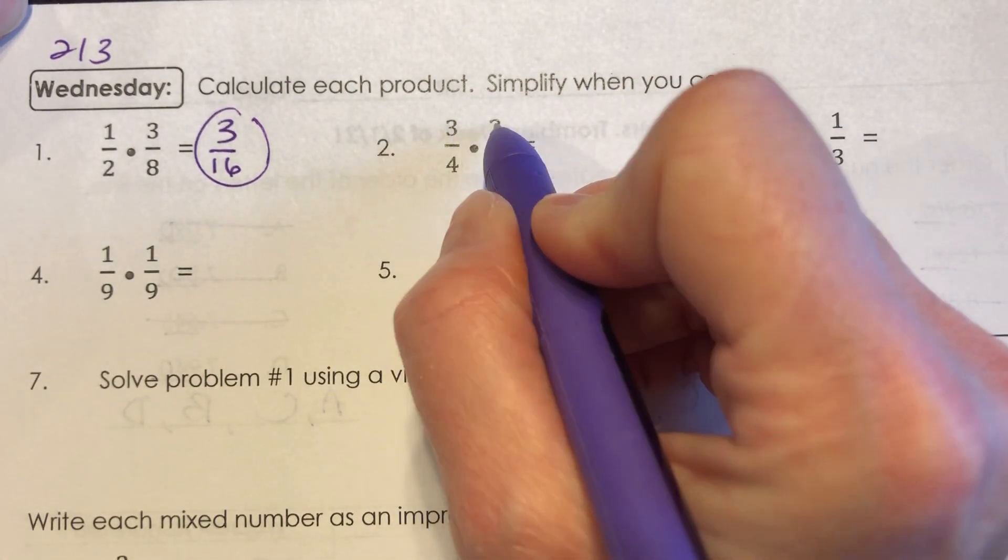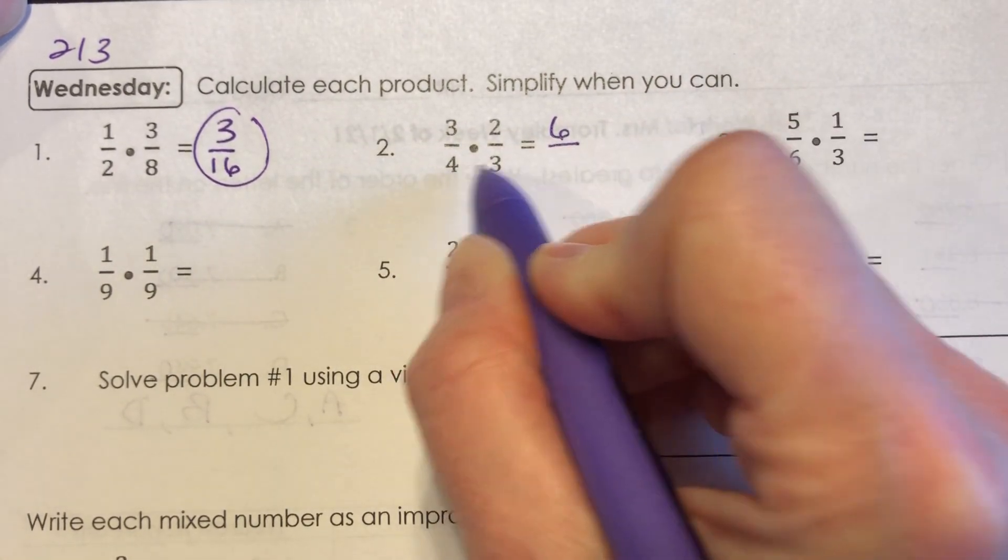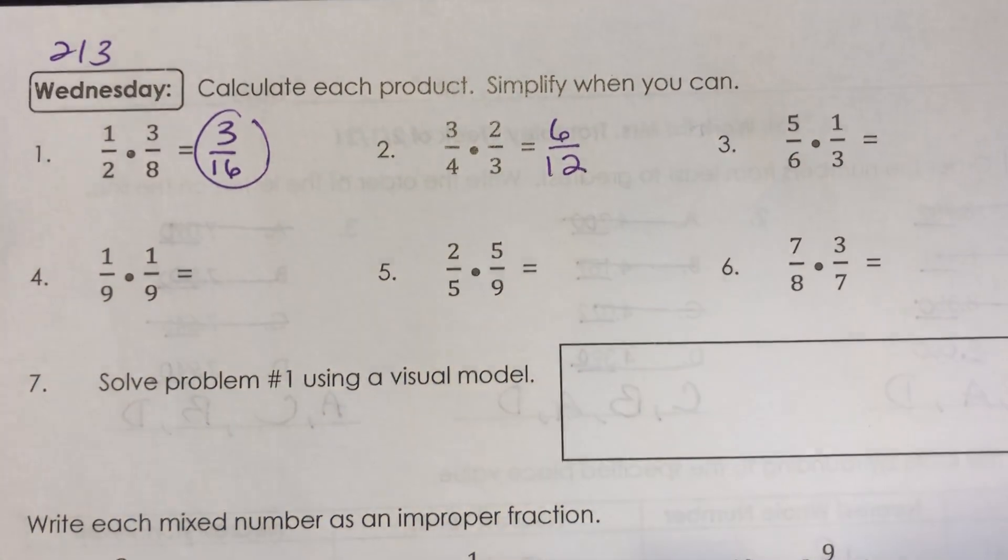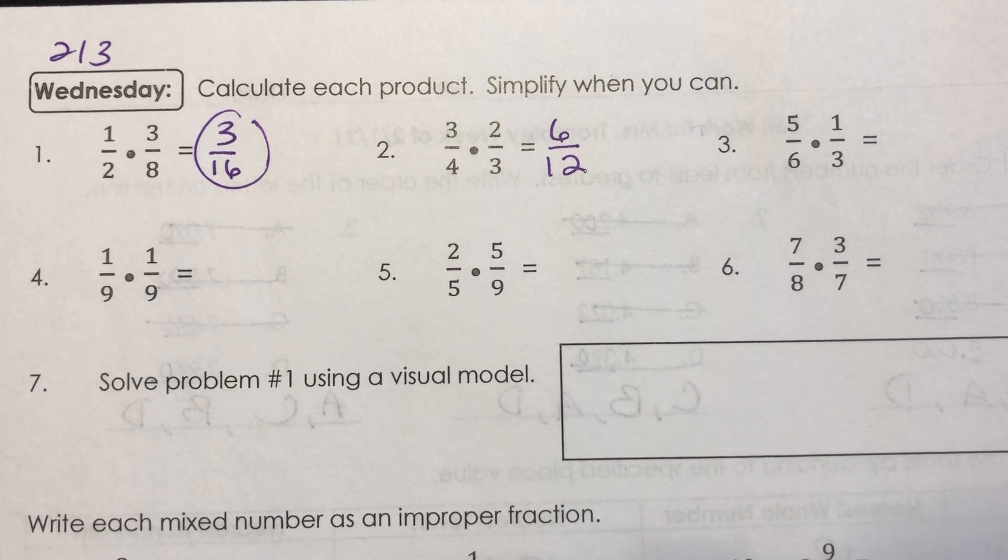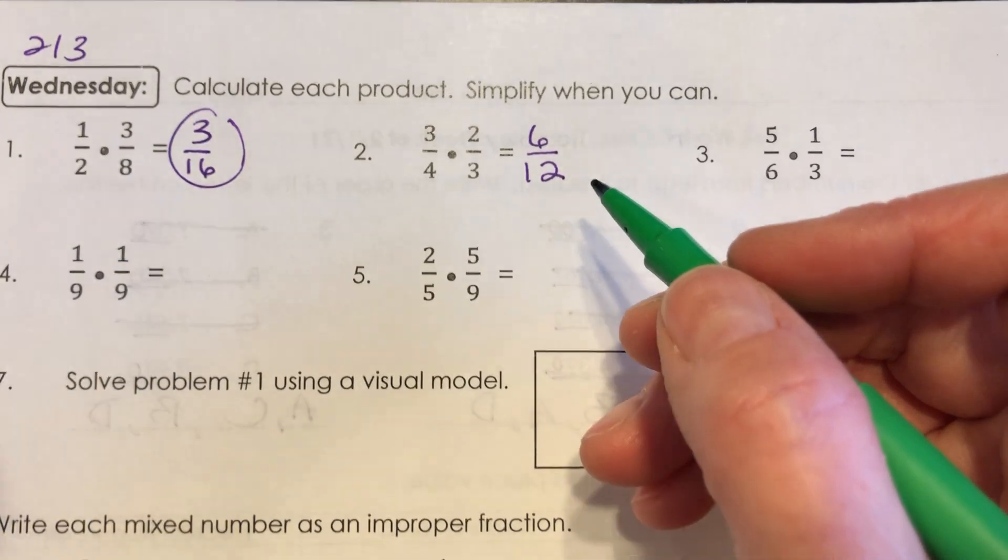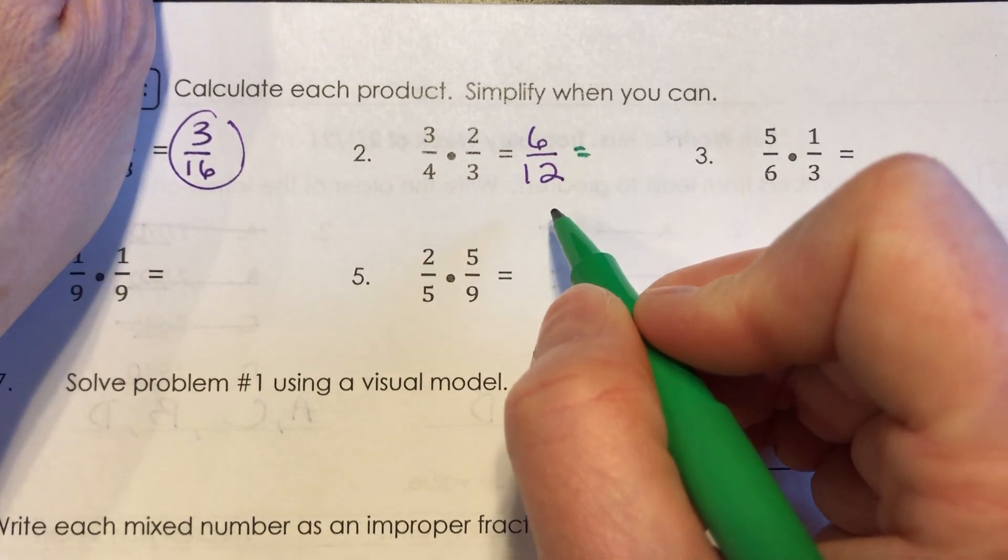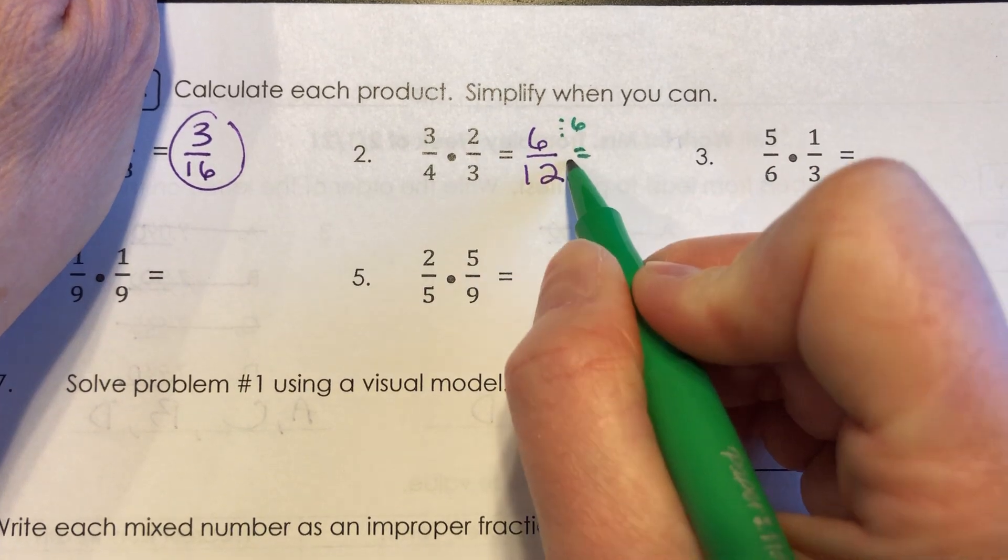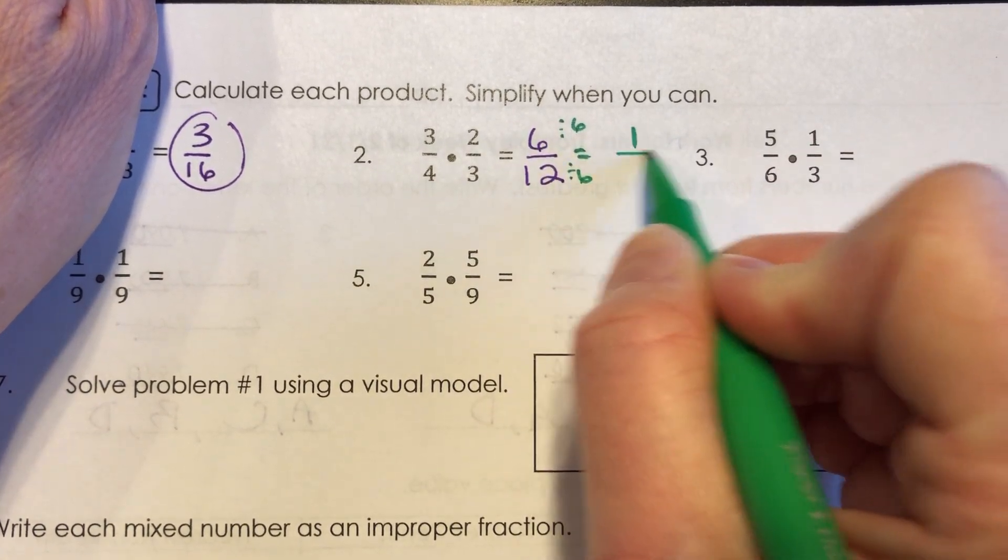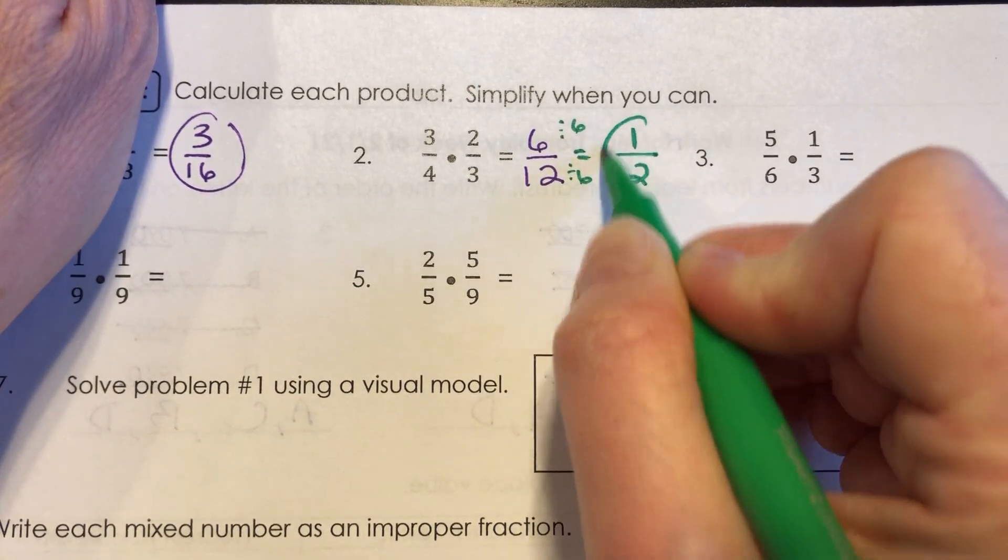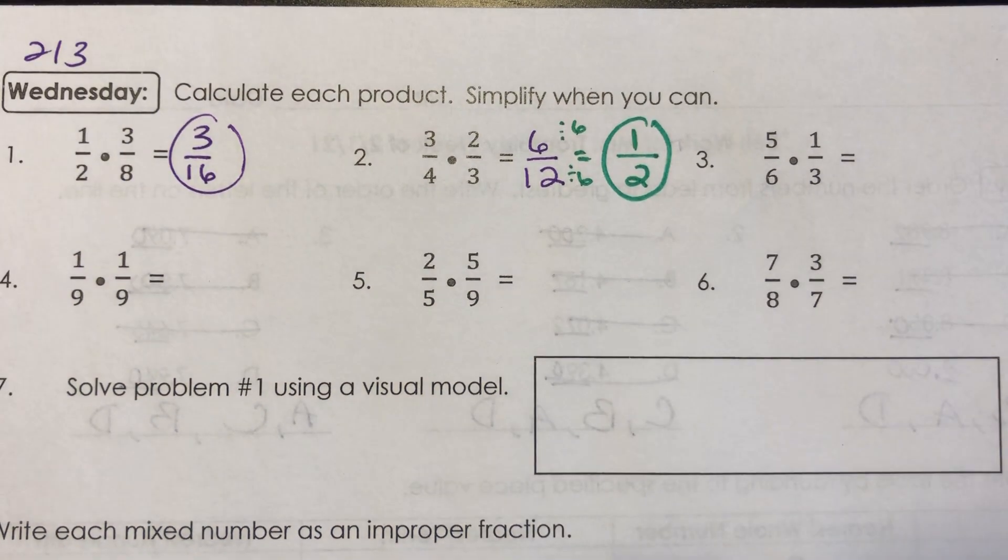Number 2, 3 times 2 is 6, 4 times 3 is 12. Now with this one, I should not leave it as 6 twelfths, right? 6 is the largest number that divides into both of those. So if you divide them both by 6, 6 divided by 6 is 1 and 12 divided by 6 is 2. So you, of course, should have 1 half for number 2.